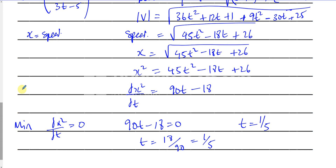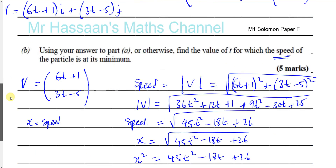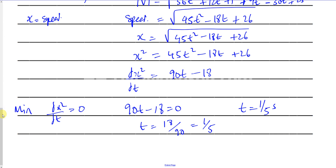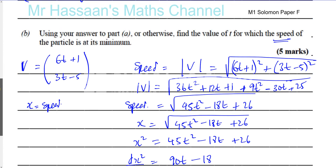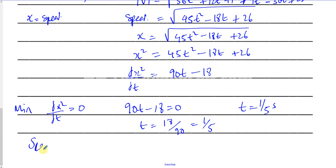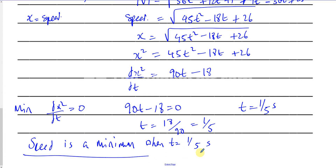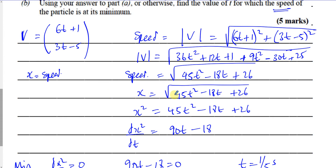When t equals 1/5 seconds, the speed is at its minimum. The square of the speed is also minimum at t equals 1/5, since speed squared is just the square of speed — so minimizing one minimizes the other. It's simply easier to differentiate x squared than the square root expression directly.